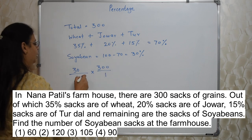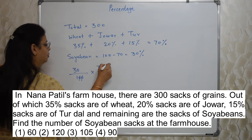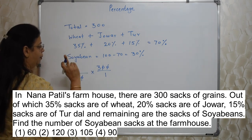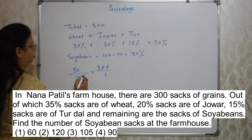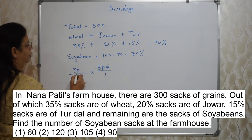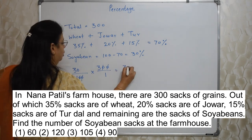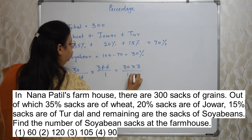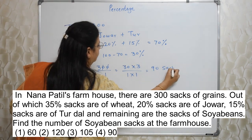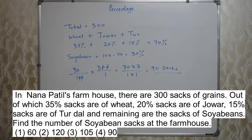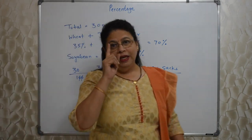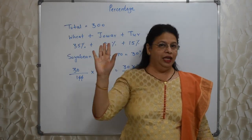So 30% of 300 upon 1. Let's cancel zeros — be careful students about the number of zeros in the numerator and denominator. After cancelling, what is remaining is 30 into 3 on top, 1 into 1 below. So 30 into 3 is 90. The answer is 90 sacks. Very very easy.